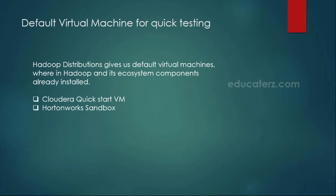Default virtual machine for quick testing. The popular Hadoop distributions like Cloudera and Hortonworks provide a sample virtual box where Hadoop is already installed, along with all ecosystem components like Hive, Pig, Flume — every ecosystem component is already installed in these virtual machines. You can simply download these virtual machines and use them for testing purposes, such as writing MapReduce code or HDFS commands without setting up Hadoop yourself. The Cloudera QuickStart VM and Hortonworks Sandbox are the most widely used.